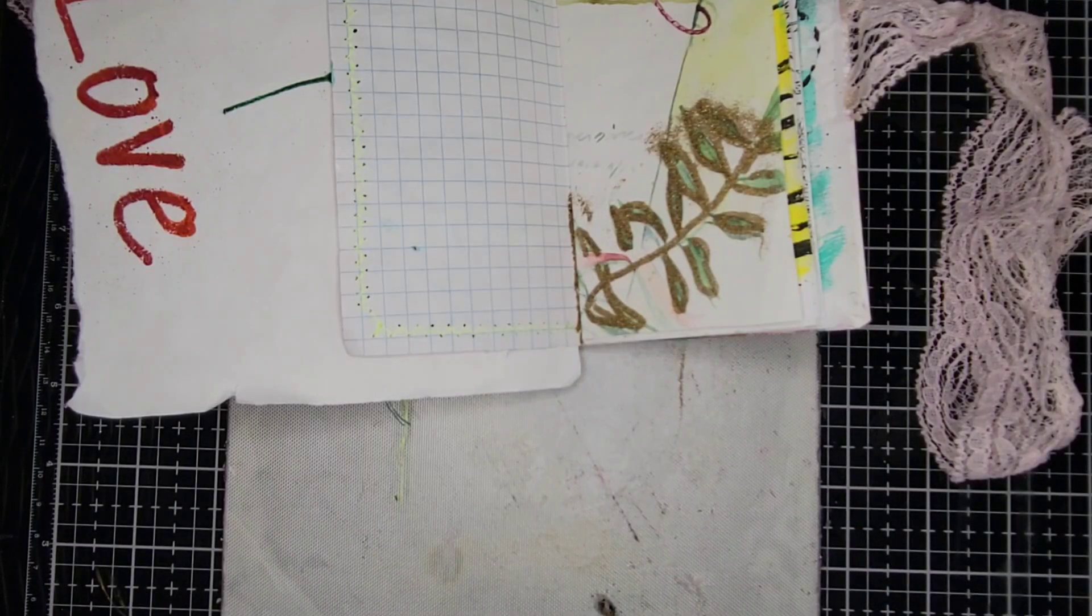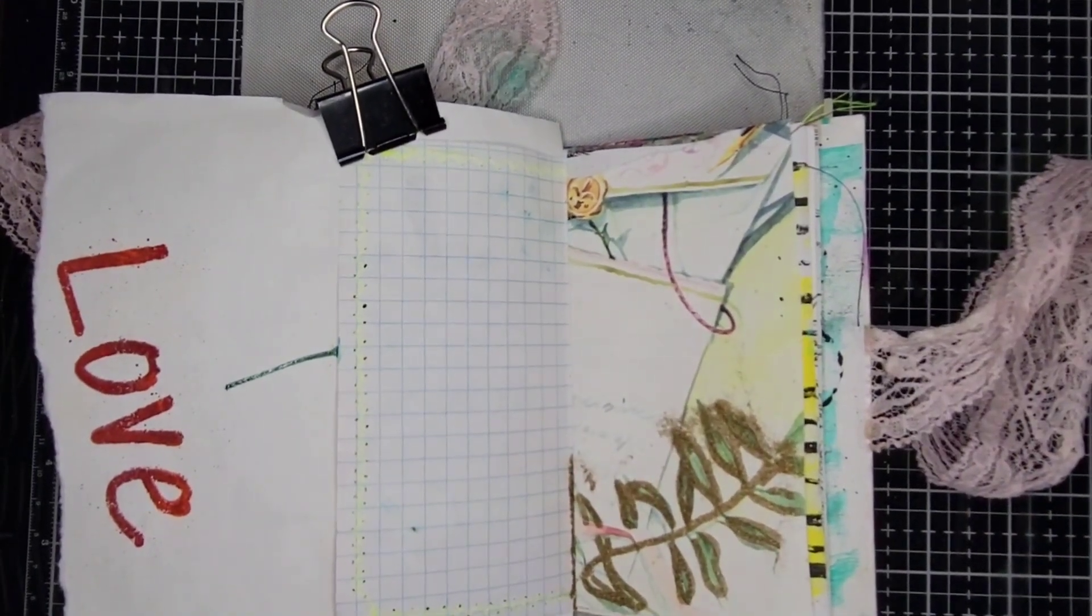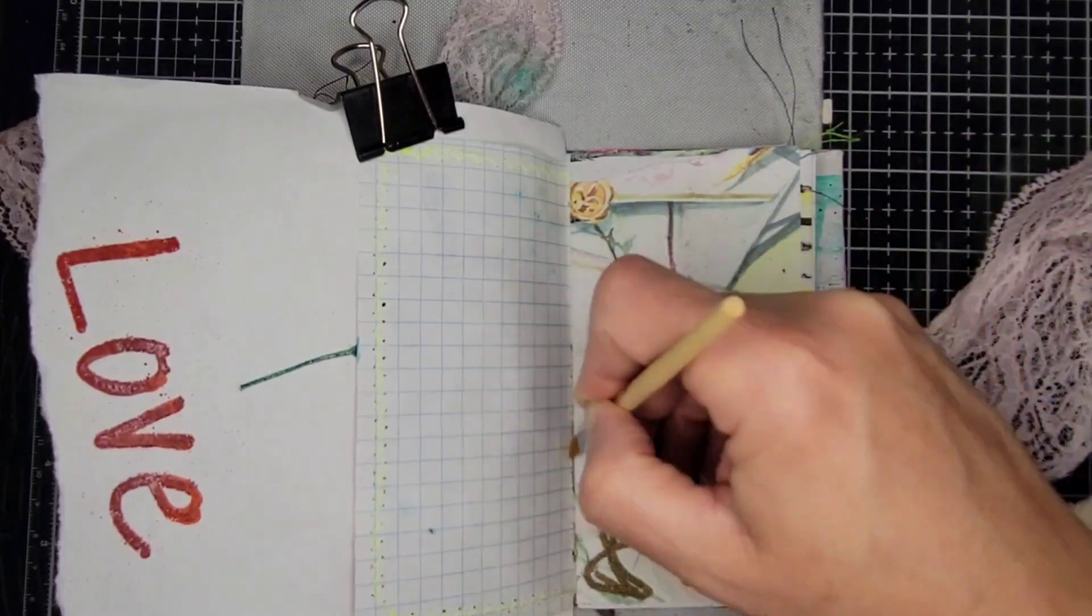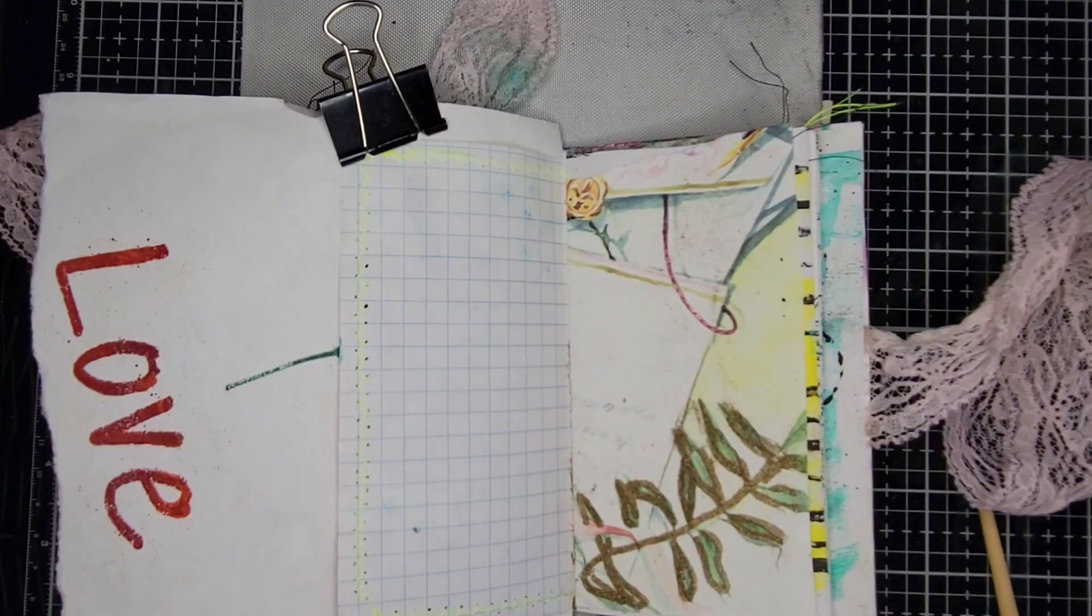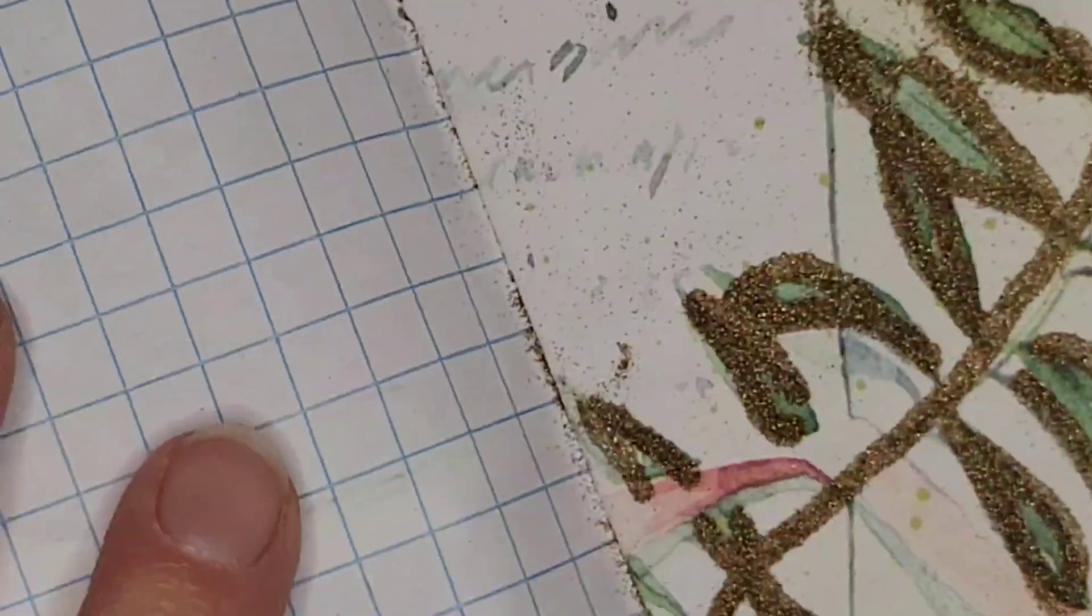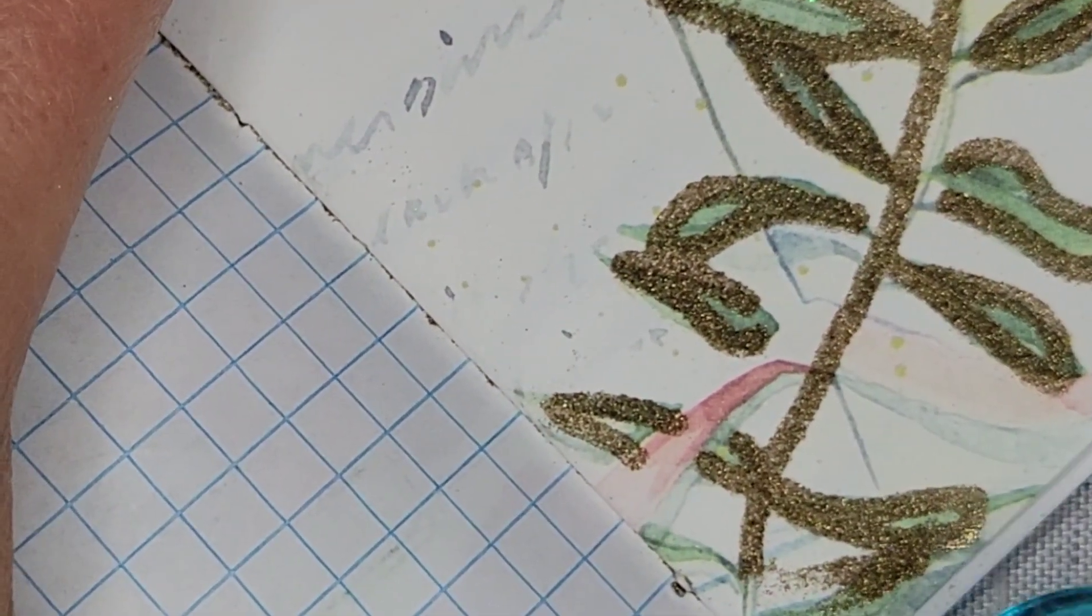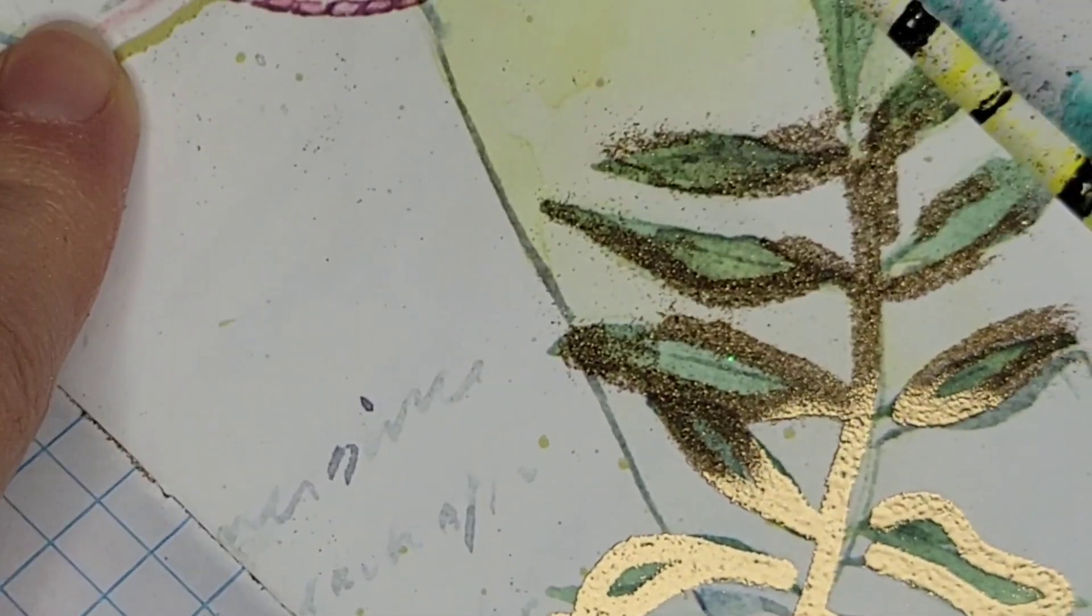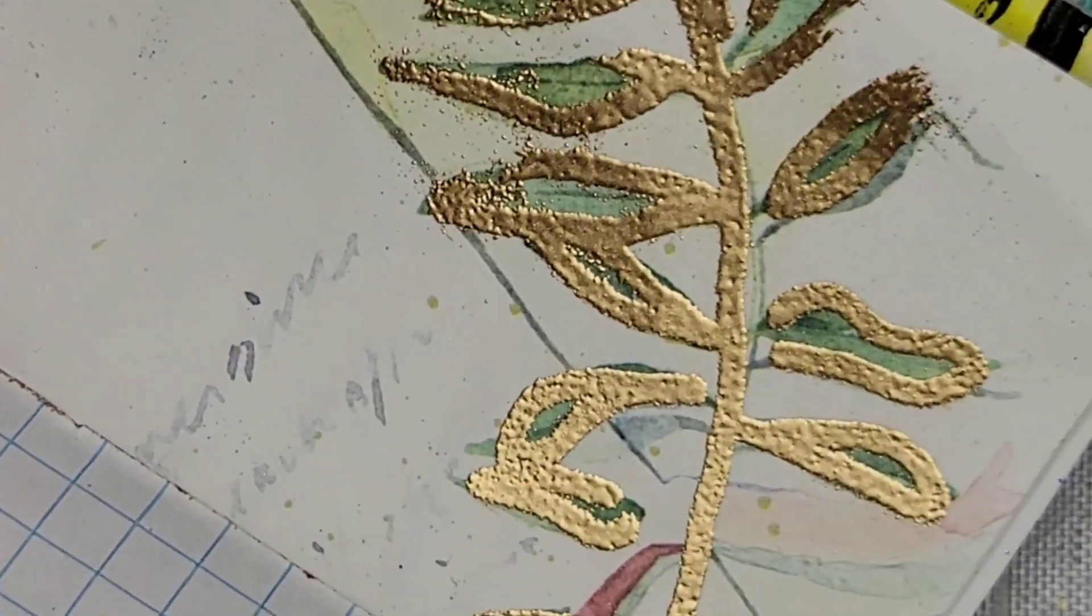So I used one of those pens that you can use with the embossing powder and kind of outlined the leaf and sprinkled on some gold embossing powder, just cleaning up the leaf lines with a little paintbrush there, and then coming in with my heat gun to activate the powder. And I just love this process, like when it comes to life and creates that awesome gold leaf outline.